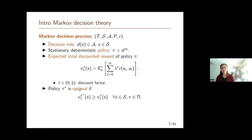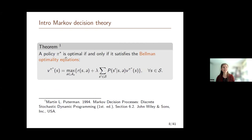We call policy pi star optimal if it maximizes this expression — its value function is greater than or equal to the value function of all other possible policies. There's one classic result in Markov decision theory: this theorem says that pi star is optimal if and only if it satisfies the Bellman optimality equations. These equations really lie at the basis of many algorithms and results in Markov decision theory. Basically, to find the best policy, all we need to do is solve this set of equations.